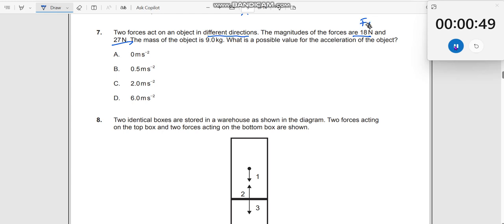So, let me consider this as F1 and this is F2. The mass of the object is 9 kg. It is also given. What is a possible value for the acceleration of the object?